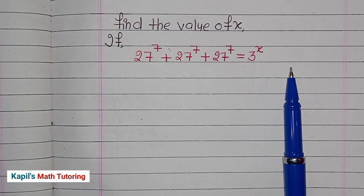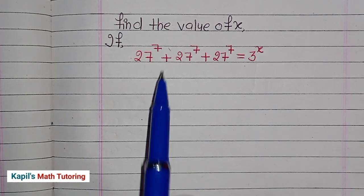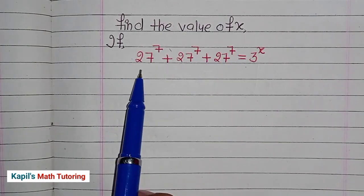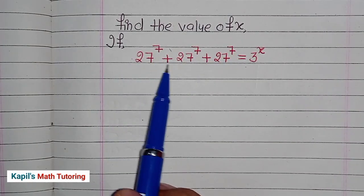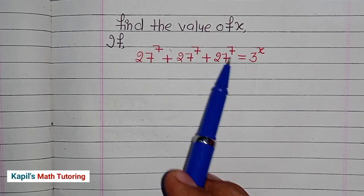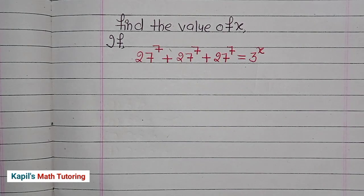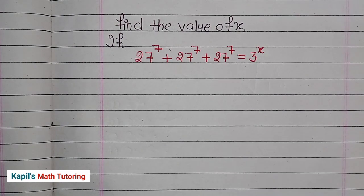Let's begin the session. The question is: find the value of x if 27 to the power 7, plus 27 to the power 7, plus 27 to the power 7, equals 3 to the power x. This equation is taken from a Math Olympiad problem.